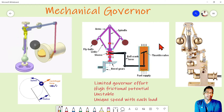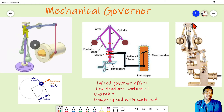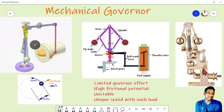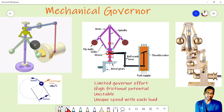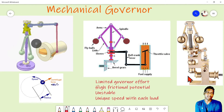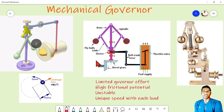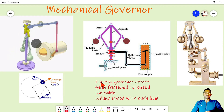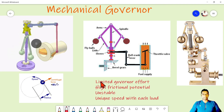Here is the real arrangement. These are the fly weights, here is the bell crank arrangement, and the bevel gears are here. This is the fuel inlet port — you can see the fuel inlet here.